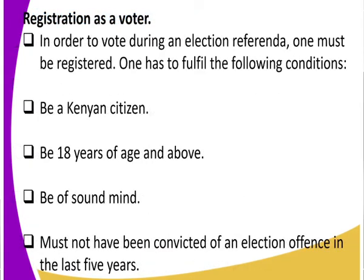Now, what are the conditions for one to be registered as a voter? First, you must be a Kenyan citizen — either by birth or registration. Second, you must have attained 18 years of age and above to get an identification card and register as a voter. Third, you must be of sound mind — an insane person cannot register as a voter. Fourth, you must not have been convicted of an election offense in the last five years.